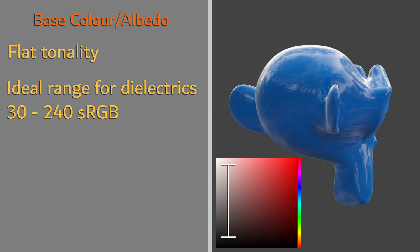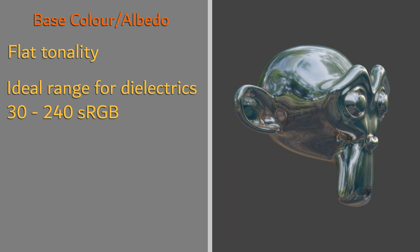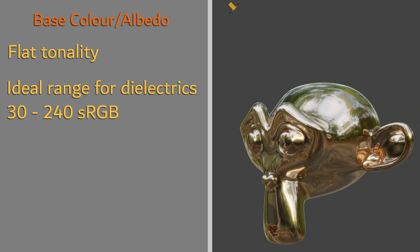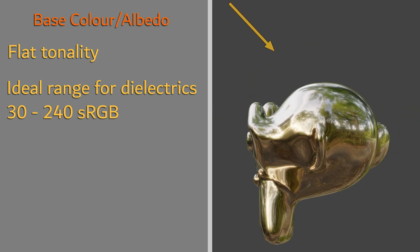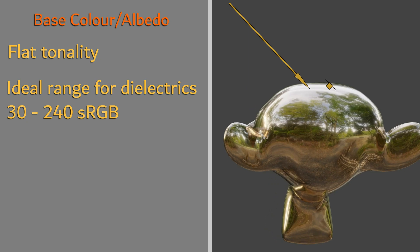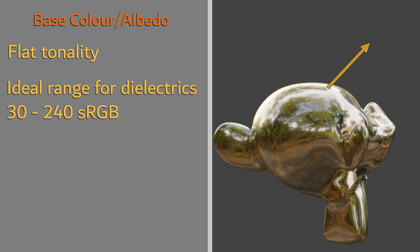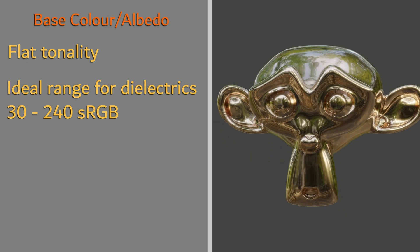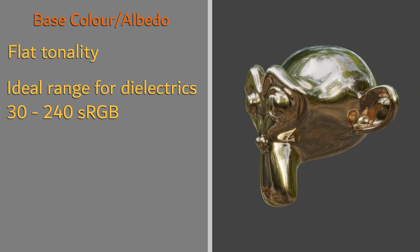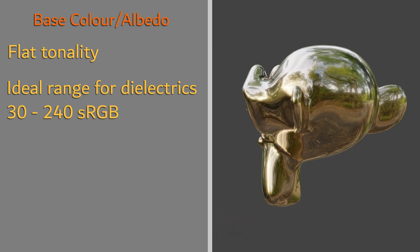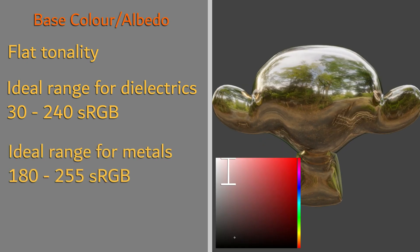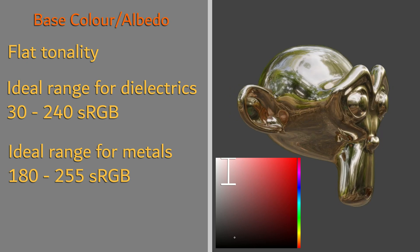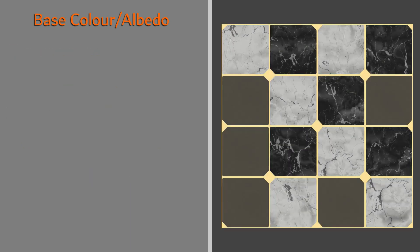This range deviates fairly drastically for metals. We need to remember that for metallic materials, the albedo map represents the specular reflection. Due to the fact that metals are roughly 60 to 100% reflective, the ideal range for color values shifts towards 180 to 255 sRGB.